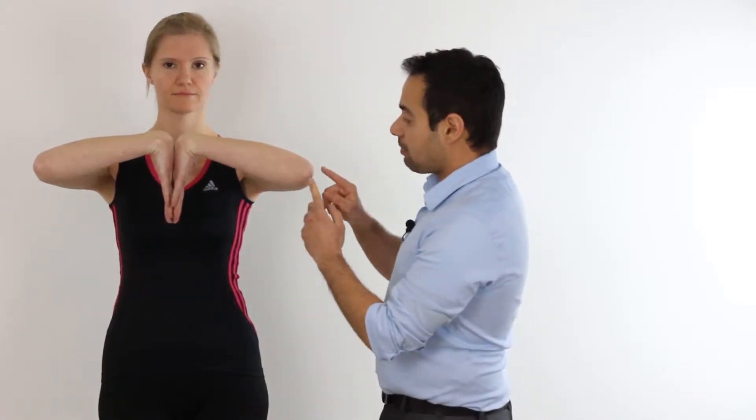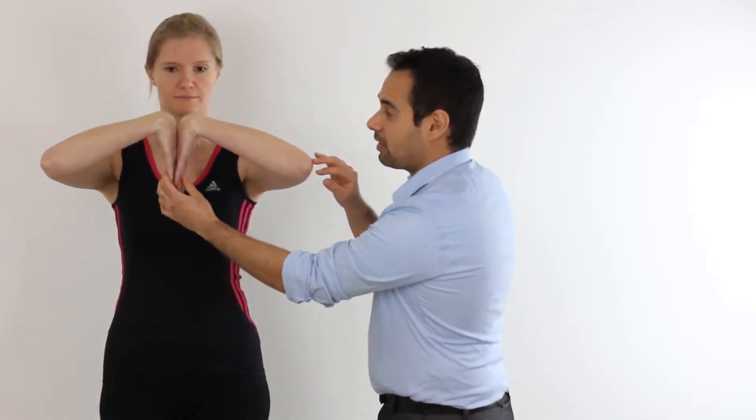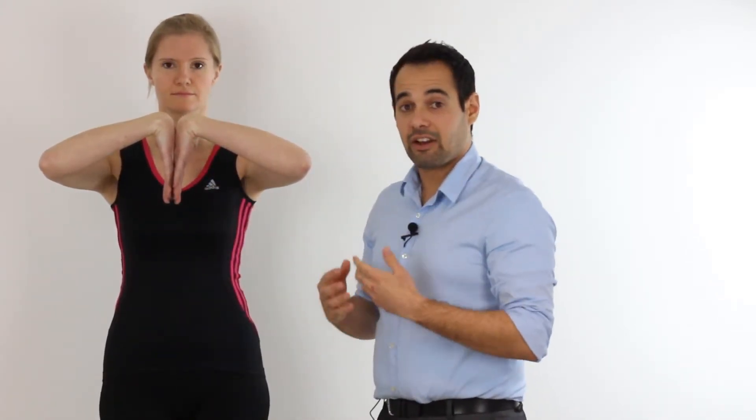From here, we ask our patient to leave their elbows where they are but to lift their hands up like so. And what this does is it will compress the median nerve at the carpal tunnel because of the position. We're going to ask our patient to hold this position for about 30 seconds, and we're going to check what they feel.